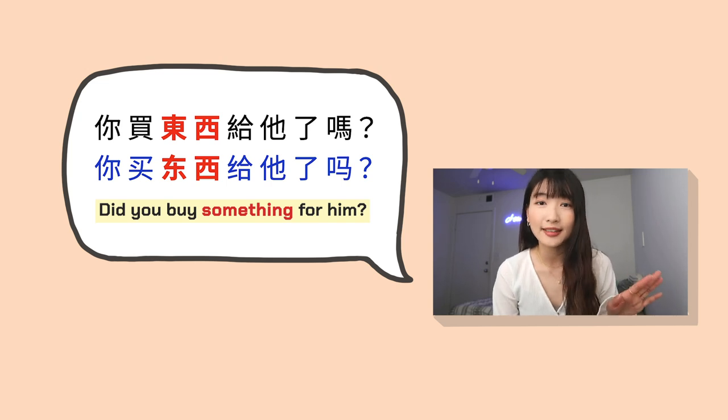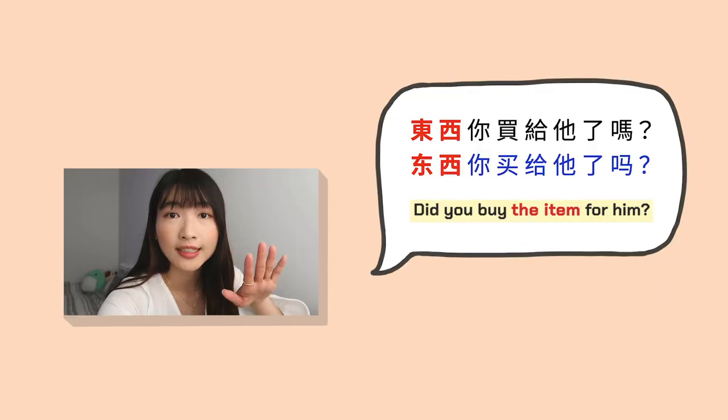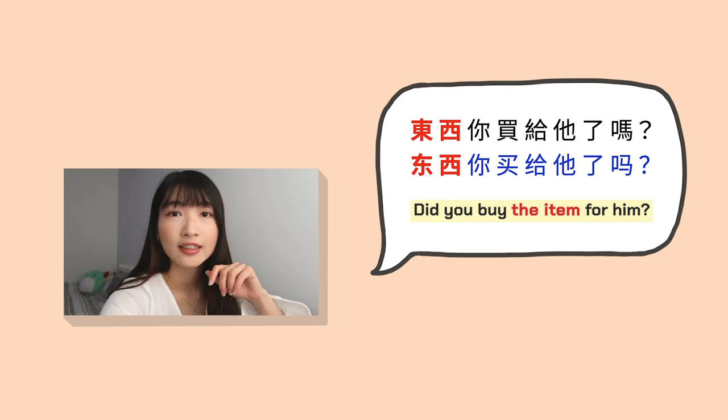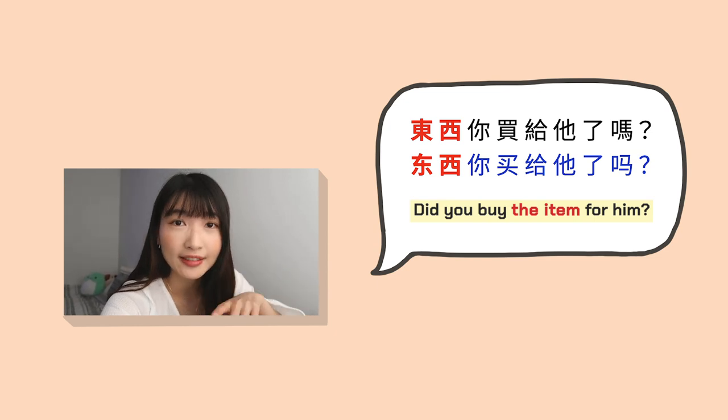你买东西给他了吗? Did you buy something for him? 东西你买给他了吗? Did you buy the item for him?